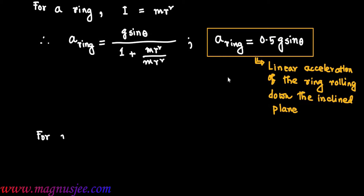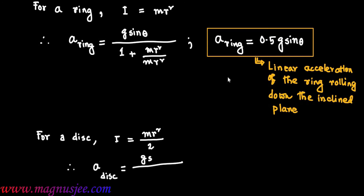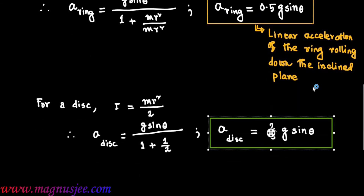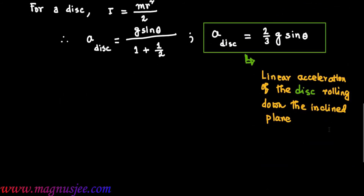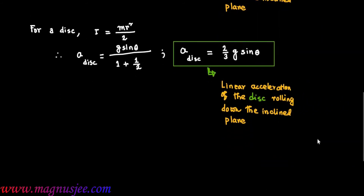For a disk, the moment of inertia I = MR²/2. Therefore, A_disk = g·sinθ / (1 + 1/2) = (2/3)·g·sinθ. This is the linear acceleration of the disk rolling down the incline plane.